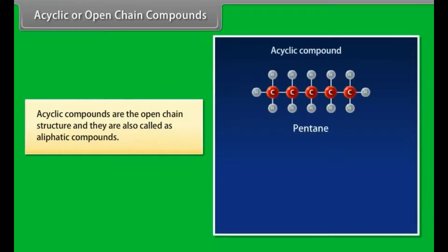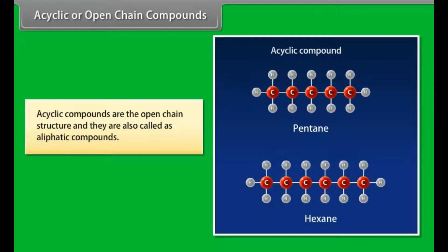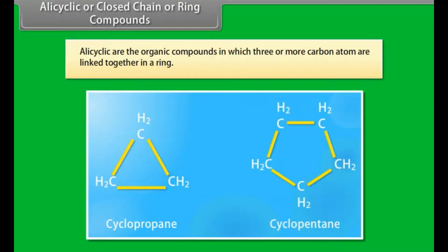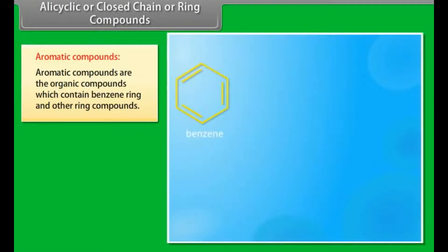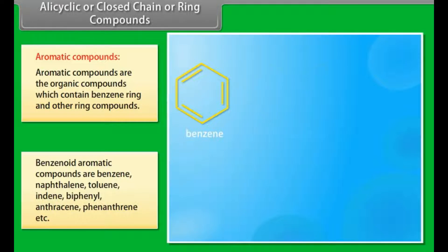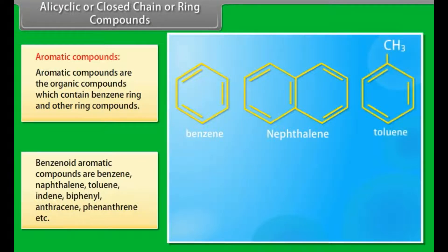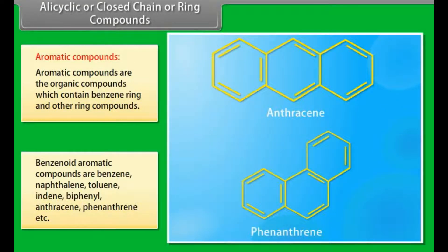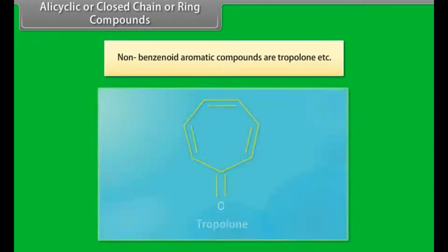Acyclic or open-chain compounds are also called aliphatic compounds. Alicyclic compounds are organic compounds in which three or more carbon atoms are linked together in a ring. Aromatic compounds contain benzene ring and other ring compounds. Benzenoid aromatic compounds include benzene, naphthalene, toluene, indene, biphenyl, anthracene, phenanthrene, etc. Non-benzenoid aromatic compounds include tropone, etc.